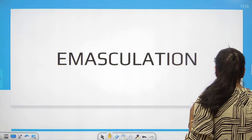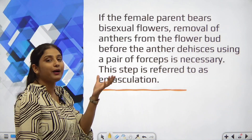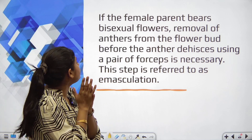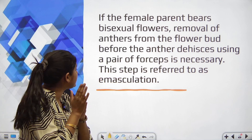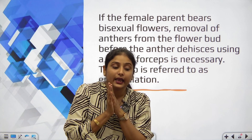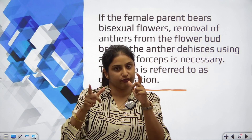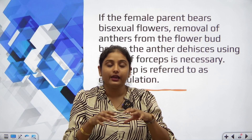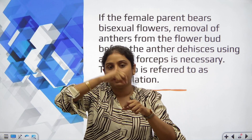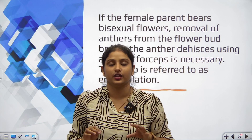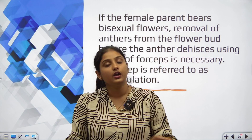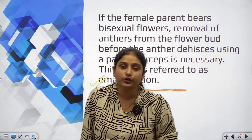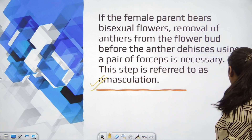First, let's understand emasculation. If the female parent bears bisexual flowers and the breeder wants to use it as the female, they will remove the anthers from the flower using forceps. This ends the chances of self-pollination and autogamy. The removal of pollen grains in this way is called emasculation.